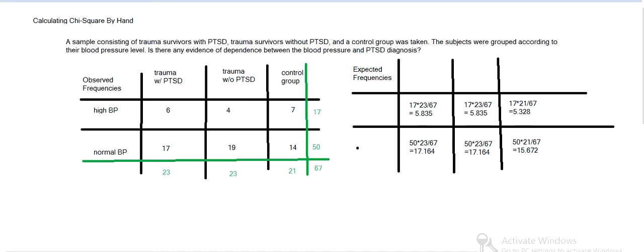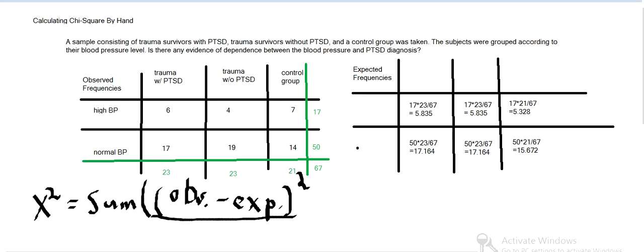So for chi-squared we do, for each value, the observed minus the expected value squared, and then we divide by the expected. And then we sum all those up. So like we do, 6 is the observed for this first row and column, minus 5.835, that squared over 5.835. And then 4 minus 5.835 squared, and so on. Then 7 minus 5.328 squared over 5.328, and then so on.